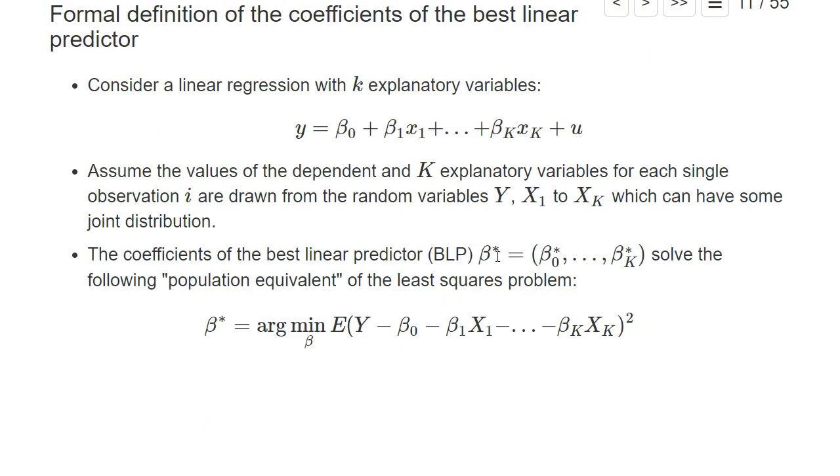These coefficients of the best linear predictor against which the OLS estimator usually converges can also be mathematically formalized as a solution of a so-called population equivalent of the least squares problem. Population means we don't take some finite sample, but we basically look at all possible realizations of the error term and of the x's and the y's, and take expected values for these. So we treat all of those as random variables.